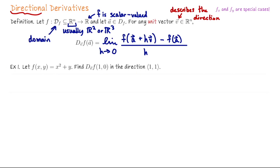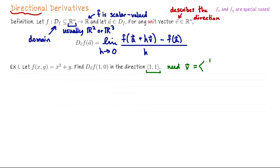Let's do an example. Suppose f of x and y is x squared plus y. Let's find the rate of change of f at the point (1, 0) in the direction of (1, 1) — in other words, one unit to the east, one unit north. As given, this is not a unit vector, so let's make it a unit vector by dividing this vector by its own magnitude. The magnitude is square root of two, so we get v equals (1/√2, 1/√2).